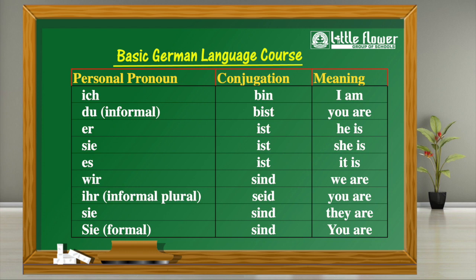You can repeat after me. Ich bin. Du bist. Er ist. Sie ist. Es ist. Wir sind. Ihr seid. Sie sind.